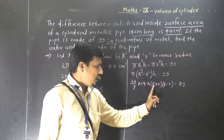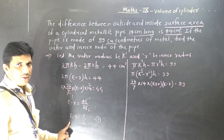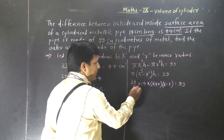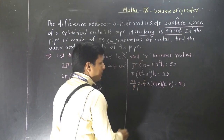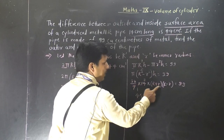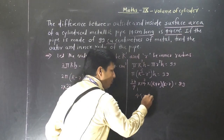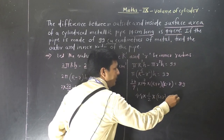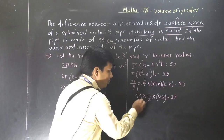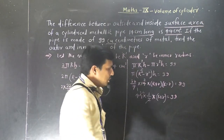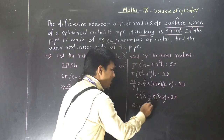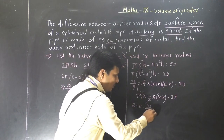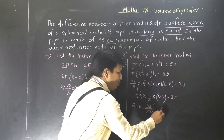We already have R minus r equals 1/2. We substitute and take: 22/7 times 44 times (R minus r) equals 1/2, multiplied by (R plus r), times h equals 99. Simplifying: 22 into 44 cancels, and (R plus r) equals 99 divided by 20. Further simplifying: capital R plus small r equals 9/2. This is our second equation.